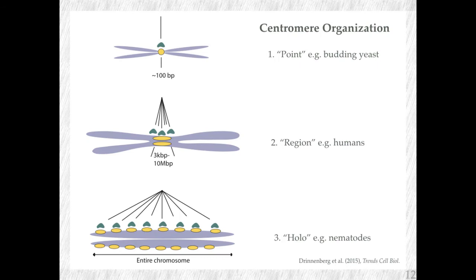When you look across species, there are several ways to organize the centromere — different ways species incorporate Sempe. There's a species where Sempe is only in one nucleosome at a very specific point on the chromosome — we call this a point centromere, found in budding yeast. Then there's the human situation, where the centromere is formed in a region on the chromosome with multiple Sempe incorporations. And then there's a third form — the holocentromere — where Sempe can be seen all over the chromosome. There are a lot of species with this form of organization, including the nematodes, specifically C. elegans.